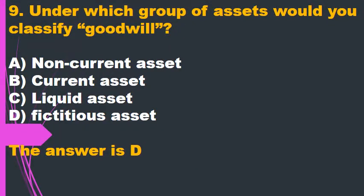Question 9. Under which group of assets would you classify goodwill? A. Non-current asset. B. Current asset. C. Liquid asset. D. Fictitious asset. The answer is D.